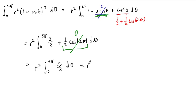This is, of course, just r squared times 3 halves times 2 pi minus 0, which is 3 pi r squared. And so that's the area enclosed under one cycle of the cycloid.